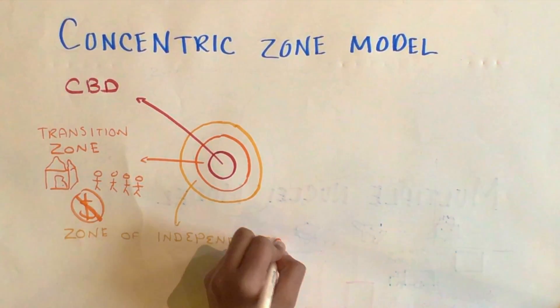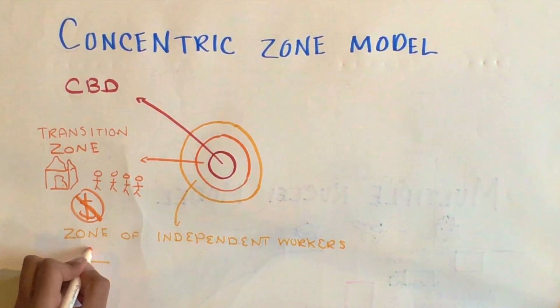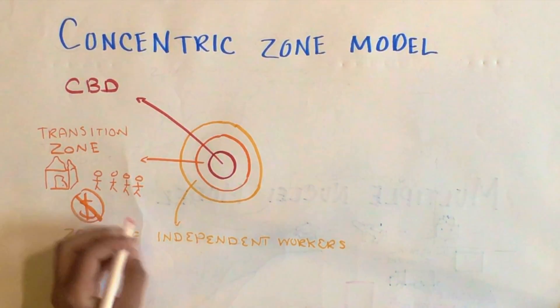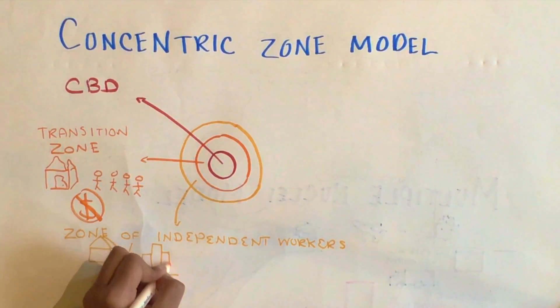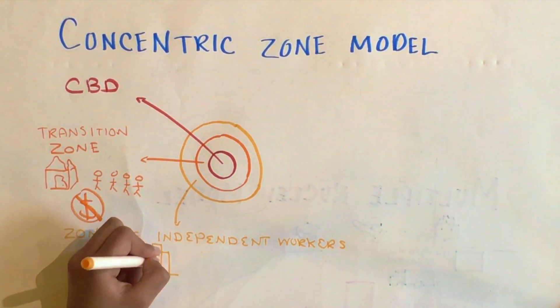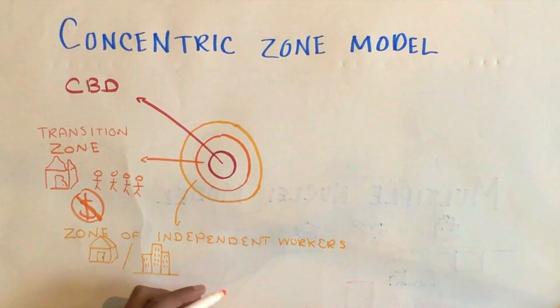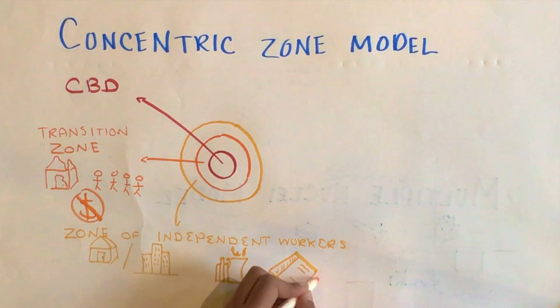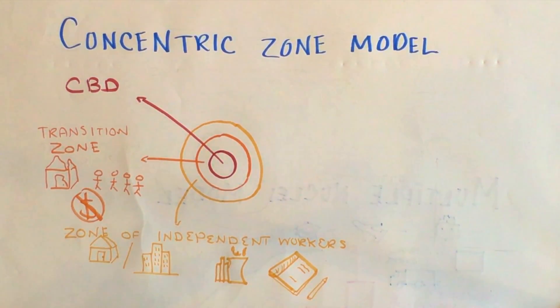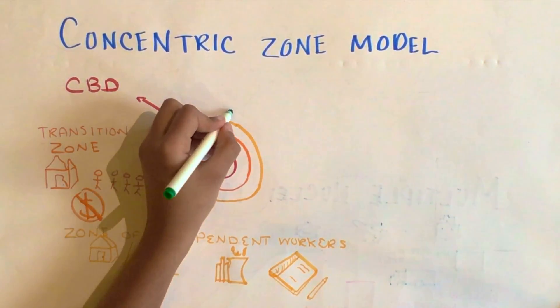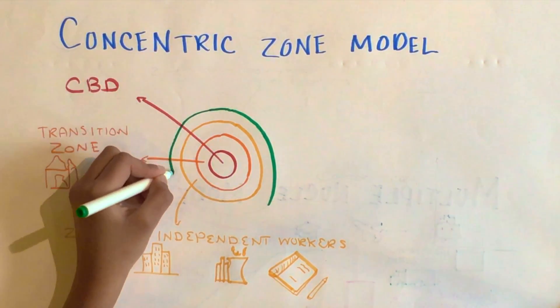Building from that is the zone of independent workers' homes. Here one will find modest older homes and apartments. You will also find stable working-class families. Mostly people here are getting educated in nearby inner-city schools. Families or singles usually live in this area, and this is also lower-to-middle-class jobs.